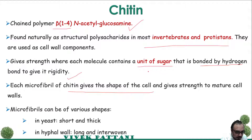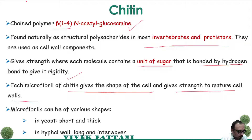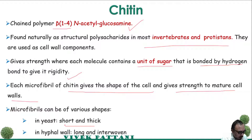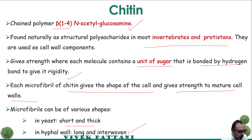Each microfiber of chitin gives shape to the cell and strength to the mature cell walls. The microfibers can be of various shapes: in the case of yeast they are very short and thick, whereas in multicellular hyphae they are long and interwoven.